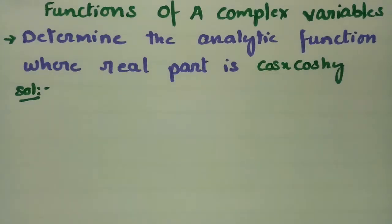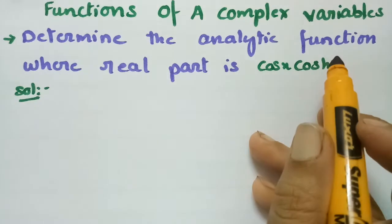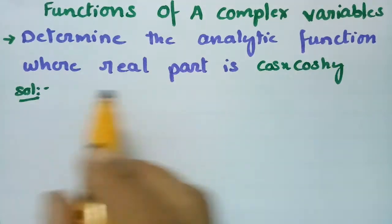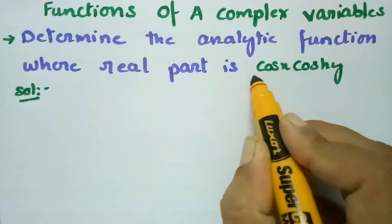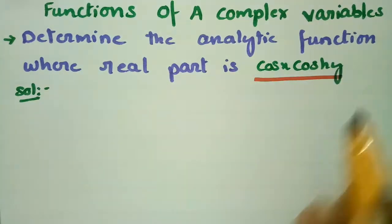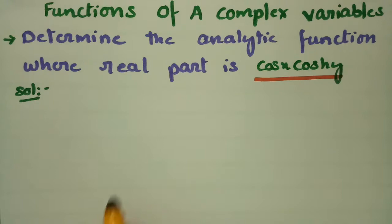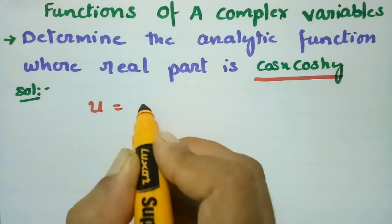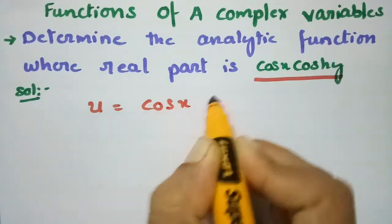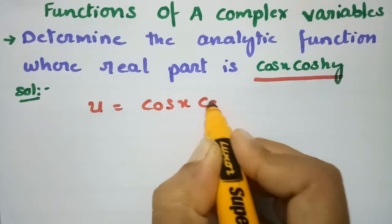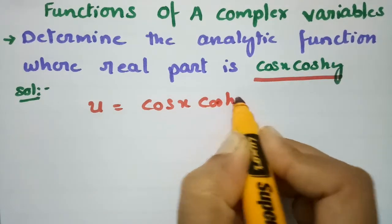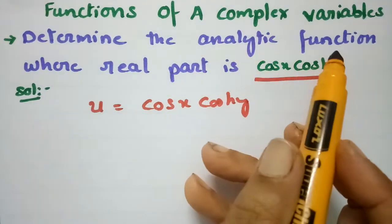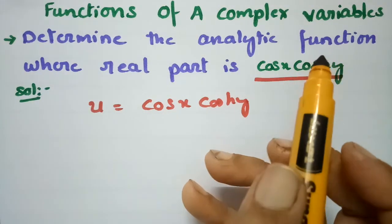This problem is on functions of complex variables. We have to determine the analytic function whose real part is given as cos(x)·cosh(y). The real part is nothing but u, so u is given as cos(x)·cosh(y) and we have to determine the analytic function.